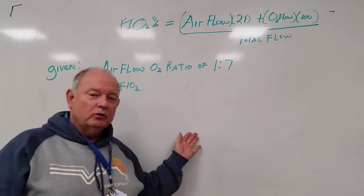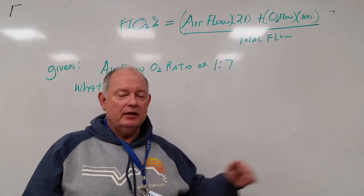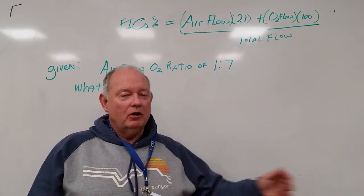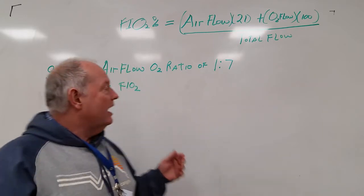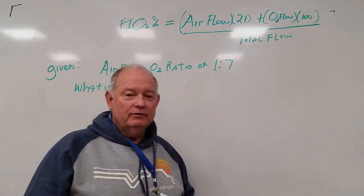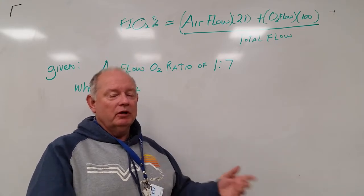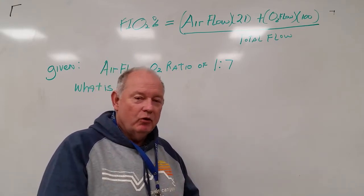This is a very difficult question because we never go in that direction. We almost always go from, we have and know the FiO2, what liter flow do we want to put it on? So this is just working backwards. We have to use a formula.